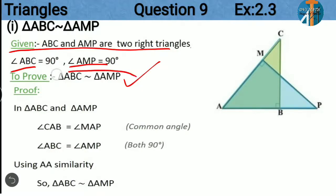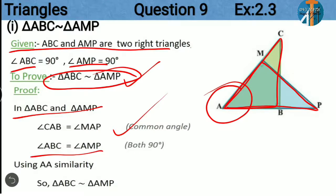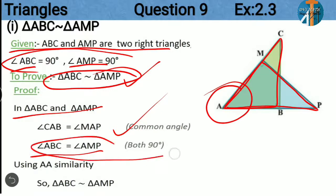In the proof, consider triangles ABC and AMP. In both triangles, angle A is common — that is, angle CAB and angle MAP is the common angle. As given, both angle B and angle M are equal to 90 degrees. So we have two angles equal, and by using AA similarity criteria we can prove that these two triangles are similar.